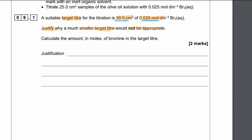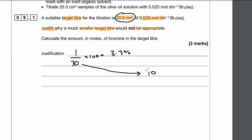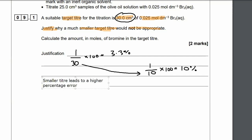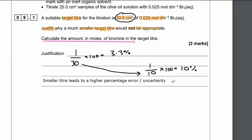Our target titrate has 30cm³. If we want to work out the percentage error, let's say the error is 1 — we do 1 over 30 times 100, giving a percentage error of roughly 3.3%. Now if we only used a 10cm³ target titrate, it would be 1 over 10 times 100, giving a 10% error. So the larger your target titrate, the smaller your percentage error. Using a smaller titrate leads to a higher percentage error or level of uncertainty in the answer. That's one mark — it justifies the larger titrate.